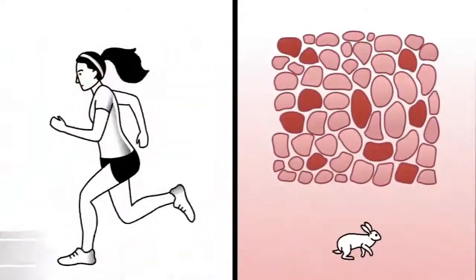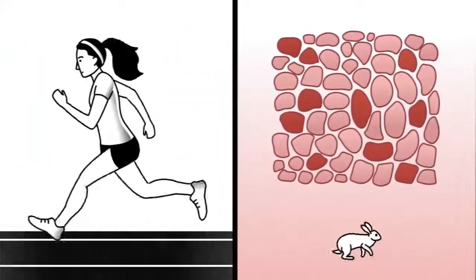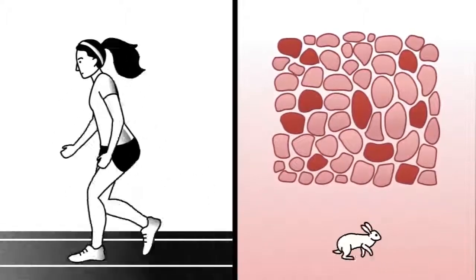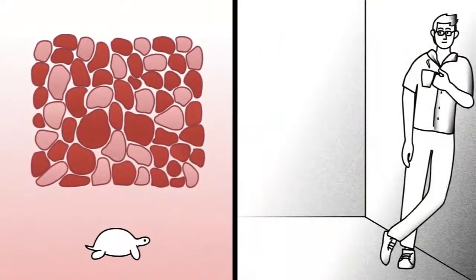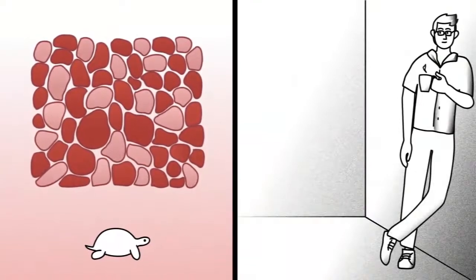A sprinter will accumulate more fast twitch muscles in her legs through continuous practice, enabling her to quickly, if briefly, pick up the pace. Whereas back muscles contain more slow twitch muscles to maintain your posture all day.